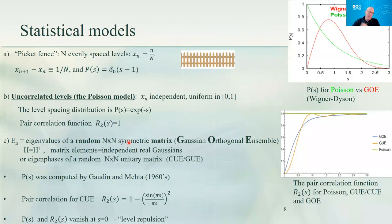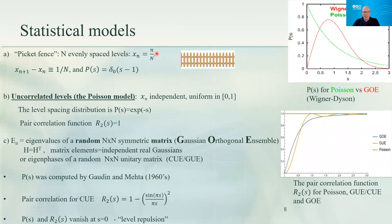Let's look at examples from random sequences to know what to aim for when trying to prove something. The first example is the picket fence: N equally spaced points n/N for n from 1 to N. All nearest-neighbor spacings are equal to 1/N, so the normalized spacings are all 1, and the level spacing distribution is just a delta function at 1. Simple, but not very exciting.